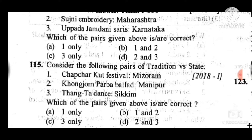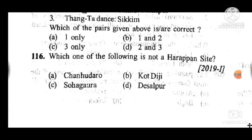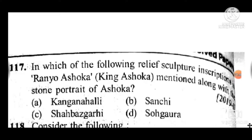Question 116: Which of the following is not a Harappan site? Answer is C — Sohkara is not a site of Harappan culture. Question 117: In which of the following relief sculptures is the description of Ranya Ashoka mentioned along with a stone portrait of Ashoka? Answer is A, Kanaganahalli.